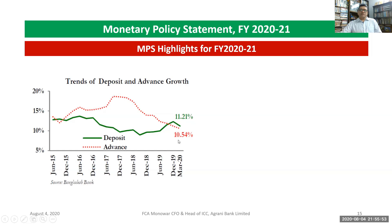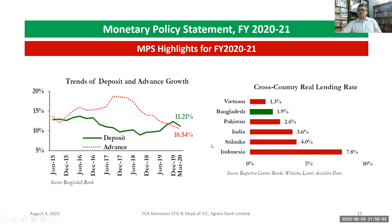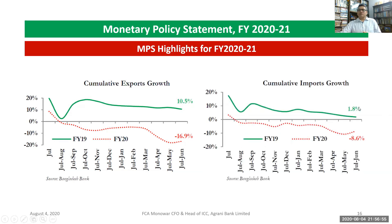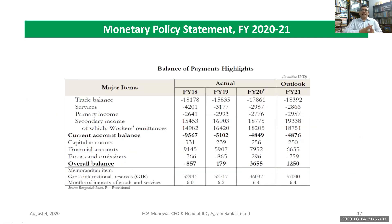Deposit growth in March 2020 is 11.21% and advance growth is 10.54%. Cross-country real lending rate comparison: Bangladesh 1.93%, Indonesia 7.8%, Sri Lanka 4%, India 3.6%, Pakistan 2.6%, Vietnam 1.33% — Bangladesh is on the lower side. Cumulative export growth from July to June: fiscal year 2019 was 10.5%, fiscal year 2020 was minus 16.9%. Cumulative import growth: fiscal year 2019 was 1.8%, fiscal year 2020 was minus 8.6%.